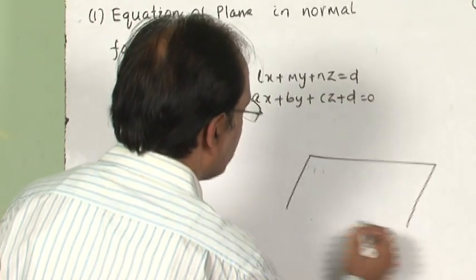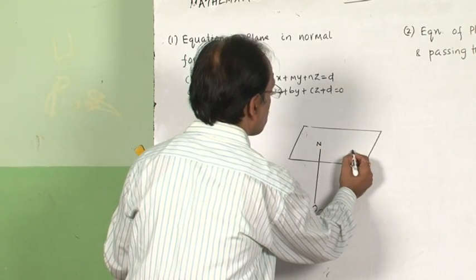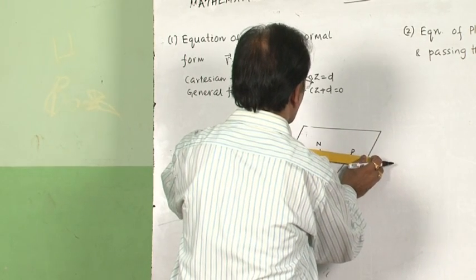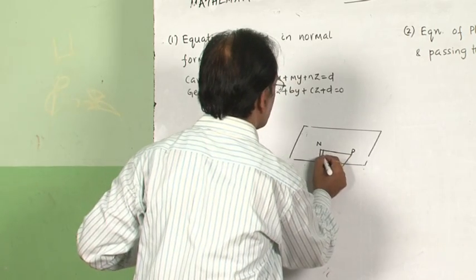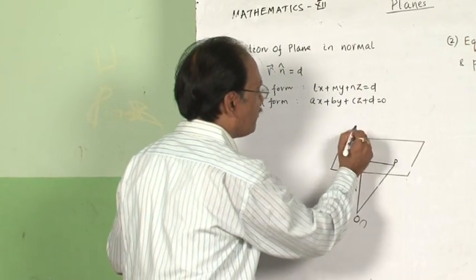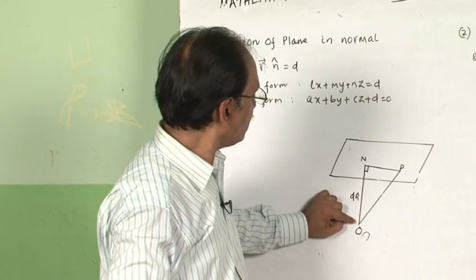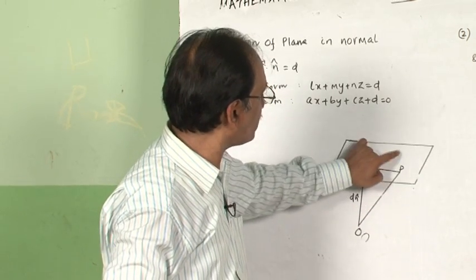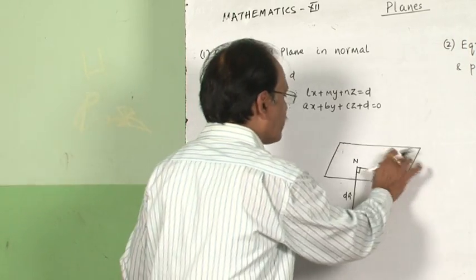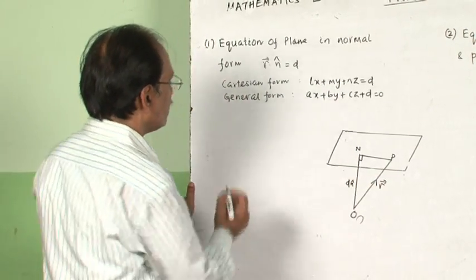Say suppose this is a plane and its equation we need to find out. We are finding the equation of the plane when the length of the normal from the origin on the plane is given. In that case we need to find out the vector ON, and take any arbitrary point P on the plane, whose position vector is r.